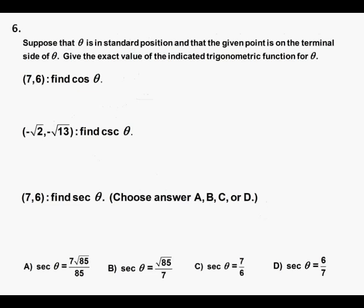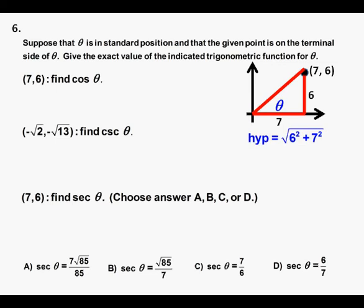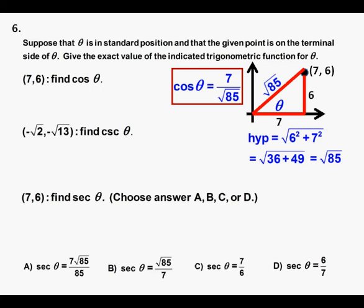Problem 6, which has three parts. Suppose that theta is in standard position and that the given point is on the terminal side of theta. Give the exact value of the indicated trigonometric function for theta. For the coordinate pair (7, 6), we can draw the point in quadrant 1, x value 7 and y value 6. For angle theta, this gives us an adjacent side of 7 and an opposite side of 6. To find the cosine, we need the hypotenuse, and that would be the square root of 6 squared plus 7 squared, which equals the square root of 36 plus 49, which is the square root of 85. Since cosine is adjacent over hypotenuse, this cosine equals 7 over the square root of 85. This is our answer of part 1, which we box in as correct.